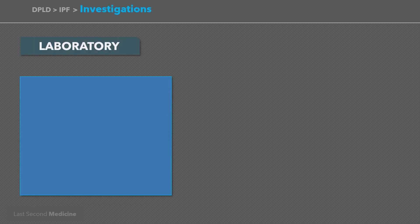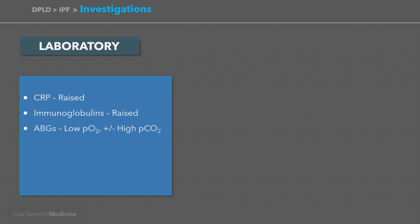Radiological investigations are most helpful in diagnosis, while other investigations help determine severity and prognosis. In lab investigations, CRP is raised and immunoglobulins are usually also raised. ABGs in moderate or severe disease will show low partial pressure of oxygen, and in advanced disease there may be retention of carbon dioxide. ANA is positive in 30% of patients, rheumatoid factor in 10%, and anti-CCP antibodies may also be weakly positive. Serological testing for these antibodies may be repeated, as lung disease may precede the appearance of connective tissue disease.